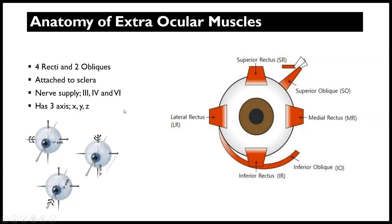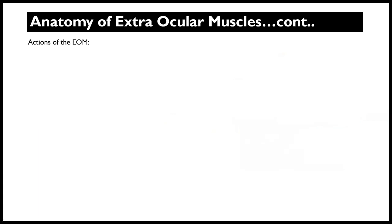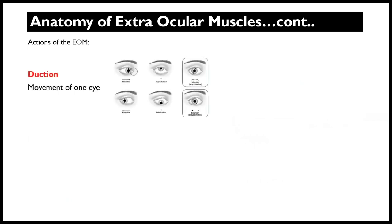The movements of these muscles are innervated by three main cranial nerves: cranial nerve three, four, and six. The movements facilitated by these muscles are almost three-dimensional, because they can move in the y-axis, the x-axis, or they can rotate, which is the z-axis. So the extraocular muscles actually operate across three axes.